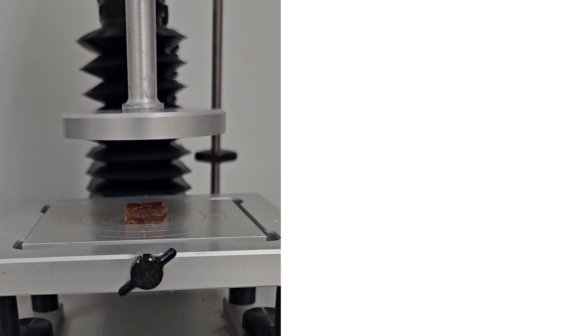I will explain how to measure fracturability, hardness, cohesiveness, adhesiveness, springiness, chewiness, gumminess, and resilience. In the first slide we have seen the two-cycle compression and decompression for apple cube. In this slide we could see the two-cycle compression and decompression of date fruit. Sample was placed on the center of the base table. We also need to set the experimental conditions in the TPA software.